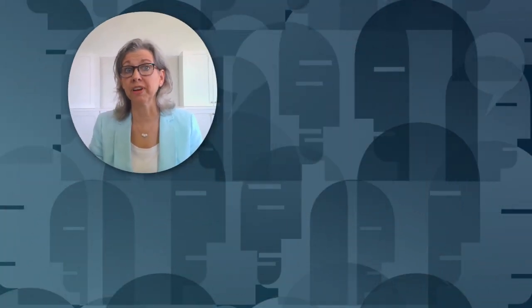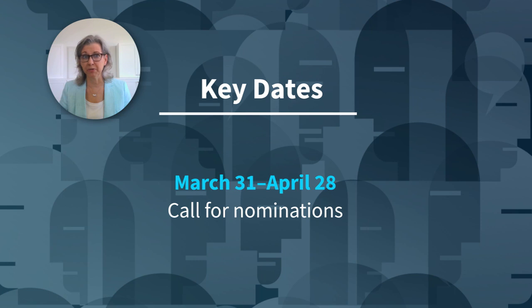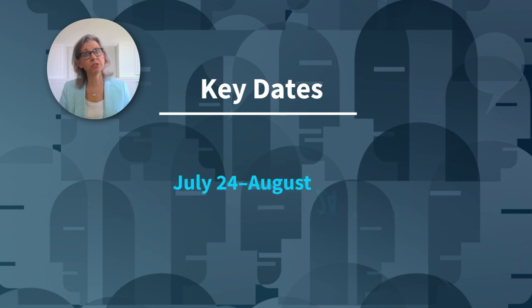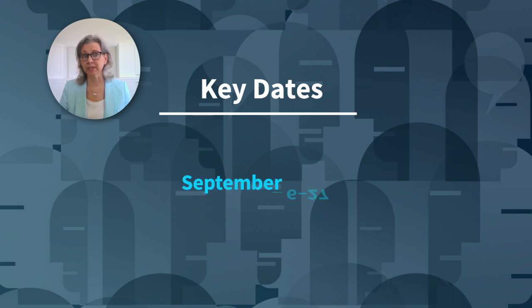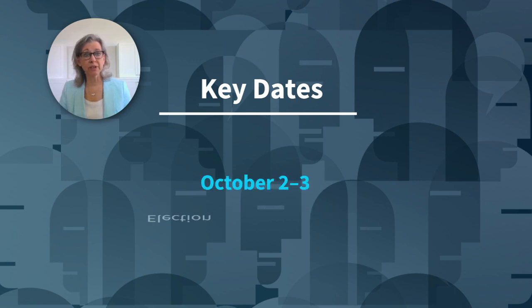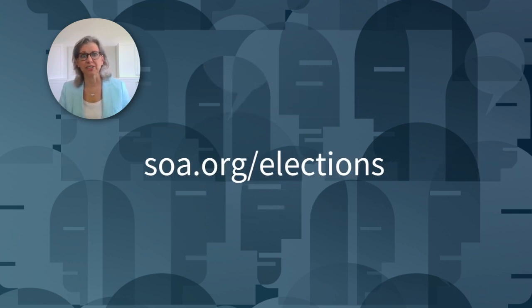Thank you for watching the video and for your interest in the role of the Society of Actuaries Board of Directors. Don't forget about the 2023 SOA election key dates. From March 31st through April 28th will be the call for applications for the Nominating Committee to review. June 26th and 27th, the ballot will be announced to the membership. From July 24th until August 24th will be the petition process. Beginning September 6th through the 27th will be your opportunity to cast your ballot for the SOA board and president-elect. Election results should be available around October 2nd. You can learn more at soa.org/elections.